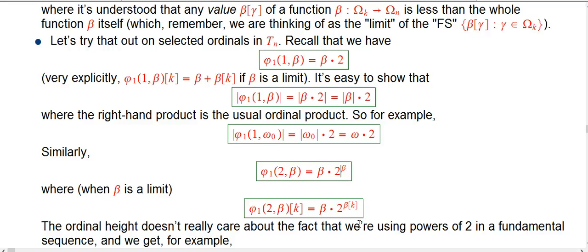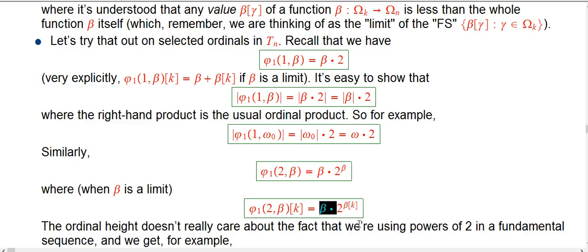Similarly, we know that when you take beta and do phi_1 with control argument 2, that says double beta, beta times — in other words, beta times 2 to the beta. To make these things work precisely, if beta is a limit ordinal, the k-th element of the fundamental sequence for that — thinking of this as a function on positive integers — is: take beta, then take 2 to the power of beta of k. It could again be a limit ordinal, and then you have to unpack that again, and unpack that again, as usual.